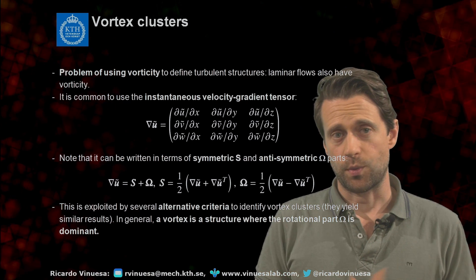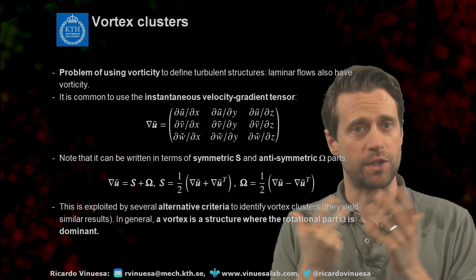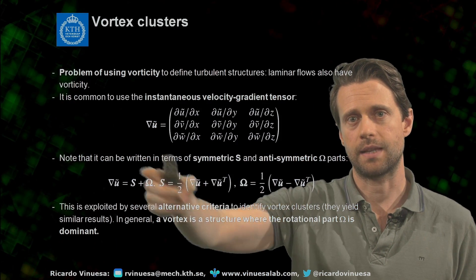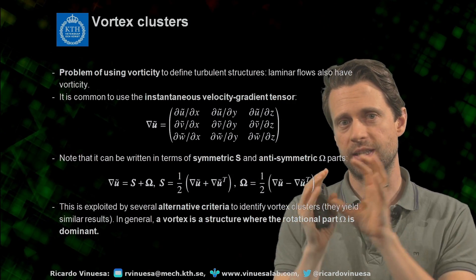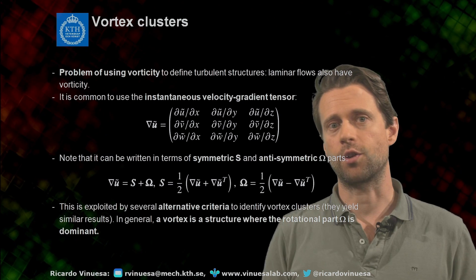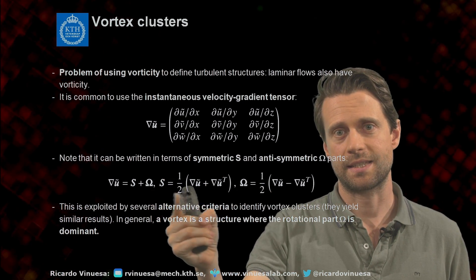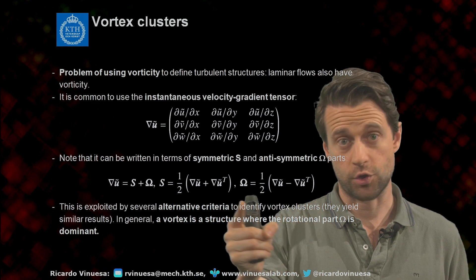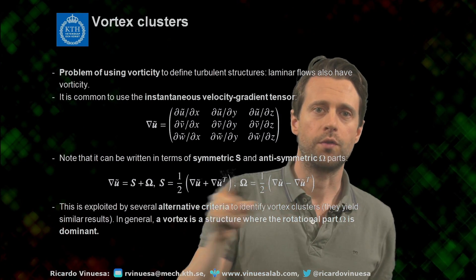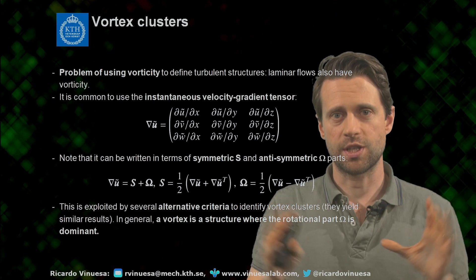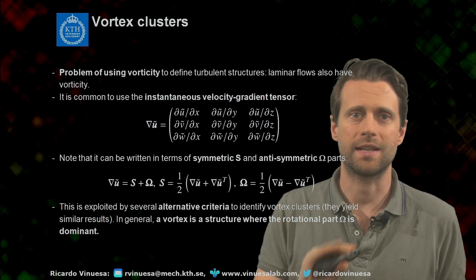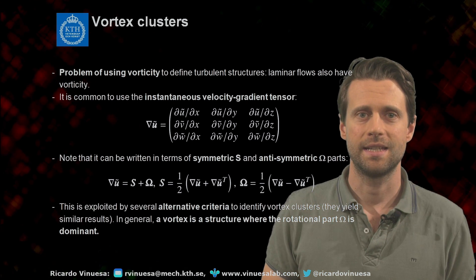How to identify extractors? One classical way is to look at vortices in wall-bounded flows, and one way to look at vortices is to look at the velocity gradient tensor — basically the partial derivatives of the various velocity components with respect to the various spatial directions. This velocity gradient tensor can be decomposed into a symmetric plus an anti-symmetric part. The symmetric part S is the strain, and the anti-symmetric part omega is the rotation. So the velocity gradient tensor is expressed as strain plus rotation, and there are different ways of using it to define vortices. Generally, a vortex is a region where the rotational part is dominant — that's a loose definition which can be more precisely concretized when we look at different criteria.